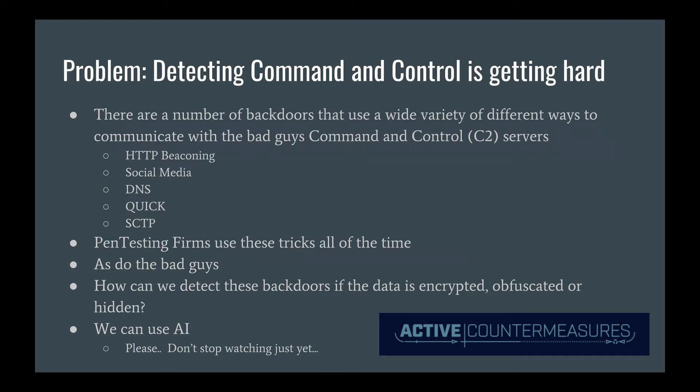This is the way that they will communicate with the system they have compromised on the inside of a network to communicate outbound to some other network on the internet. And this can be done through HTTP beaconing, social media such as Gmail or Tumblr or Twitter, DNS traffic, QUIC protocol for UDP for multi-honed streaming data, and also SCTP.